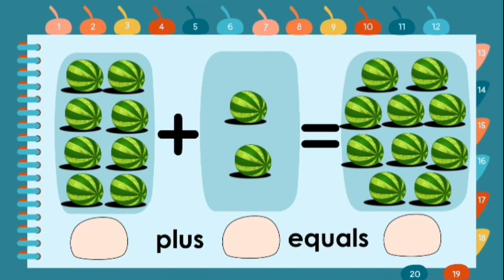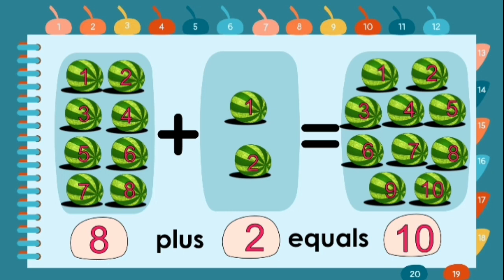Another example. Students, let's count together: one, two, three, four, five, six, seven, eight — eight watermelons. Plus one, two — two watermelons. Equals. Let's count: one through ten. So we have eight watermelons plus two watermelons equals ten.